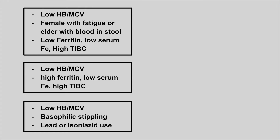The first patient is going to have a low hemoglobin, a low MCV, and it's going to be a female with fatigue, or an elder patient with blood in the stool, low ferritin, low serum iron, and a high TIBC. This is iron deficiency anemia.